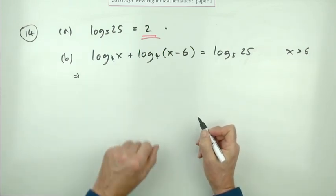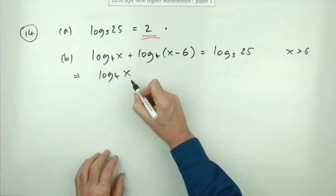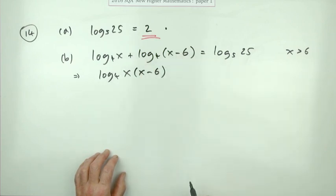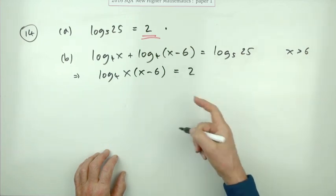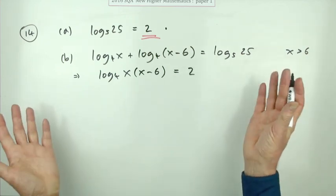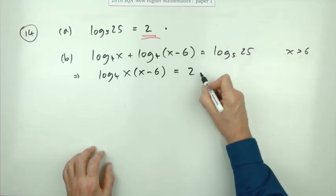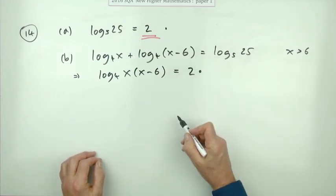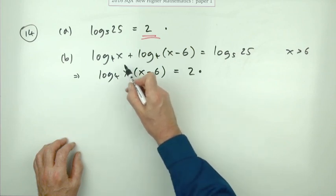The steps would be: use your rules—if you're adding the logarithms, that means you're multiplying the values they act on (the arguments). You already know that log₅ of 25 is 2. You get two marks here: one for using the result of part A, and one for using the law of logs to add them.